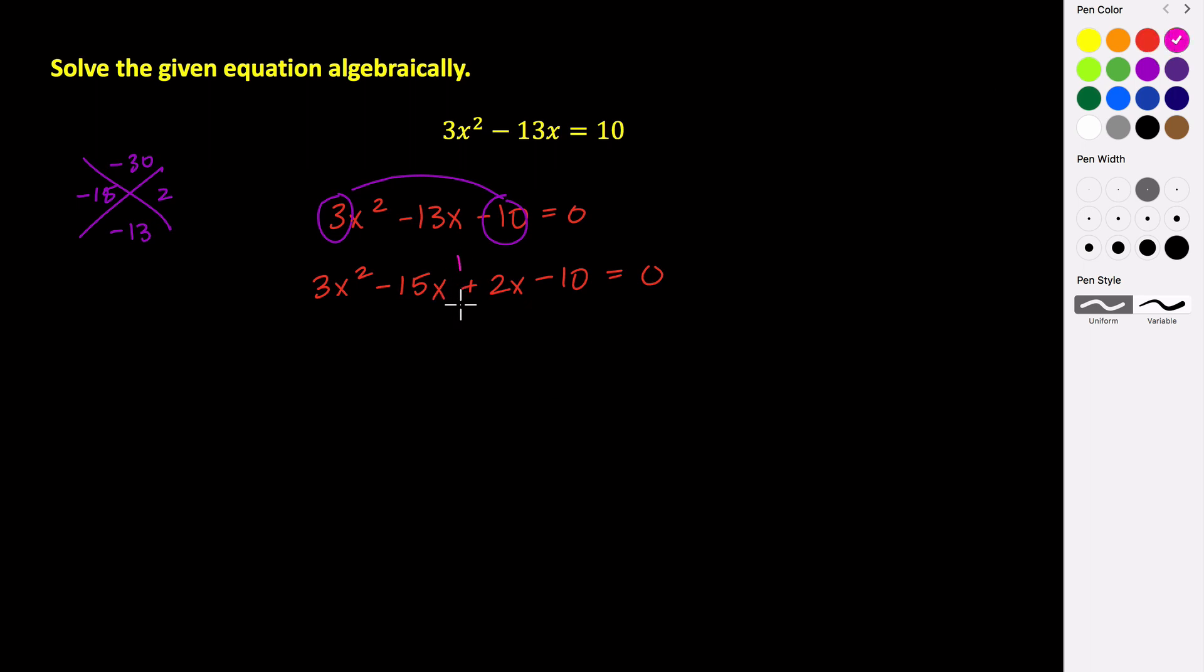And now we split these and factor. So the greatest common factor of these two terms is 3x. So we get 3x times x minus 5. And the greatest common factor of these two terms is a 2. So positive 2 times x minus 5 equals 0.